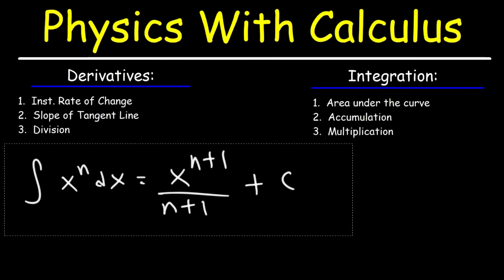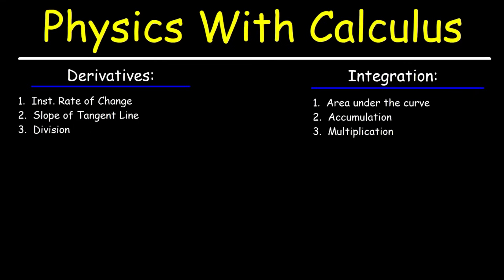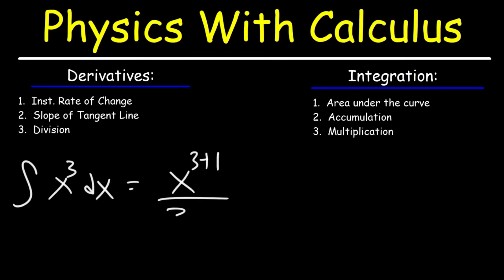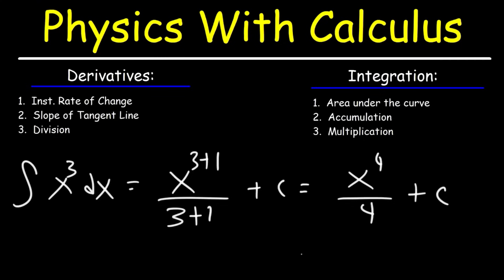Let's put this into practice. The antiderivative, or indefinite integral, of x cubed dx is x to the 3 plus 1 divided by 3 plus 1 plus c. This ends up being x to the 4th divided by 4 plus c, which you can write as one-fourth x to the 4th plus c.